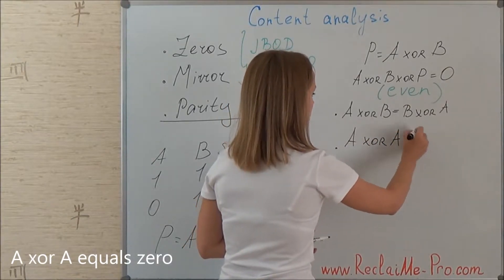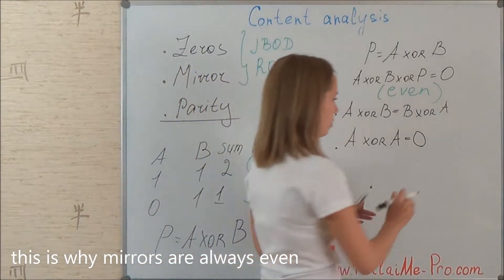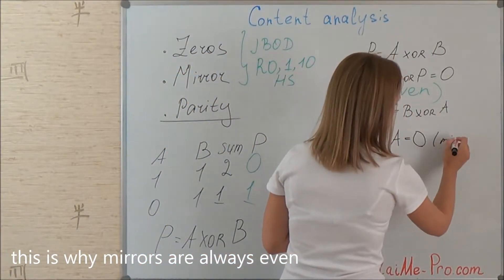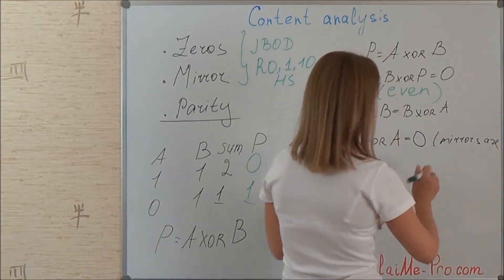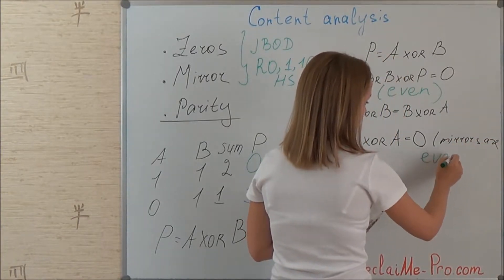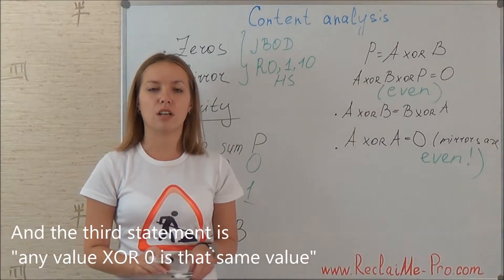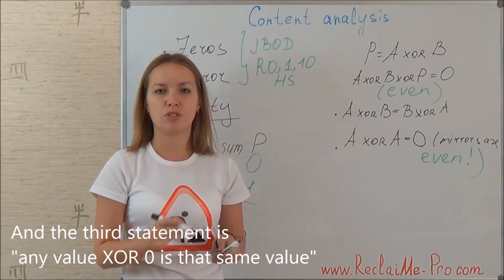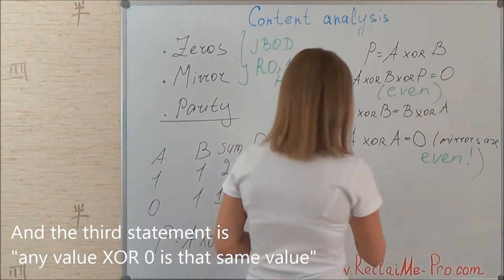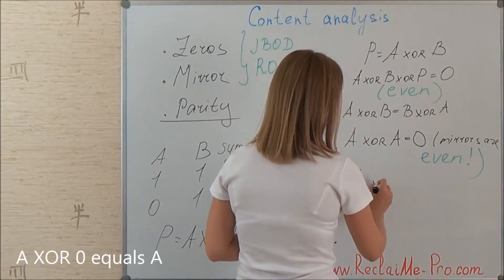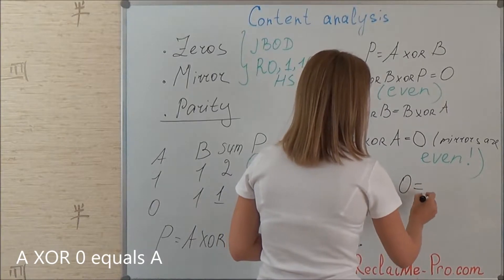Any value XOR itself equals zero. And A XOR 0 equals A.